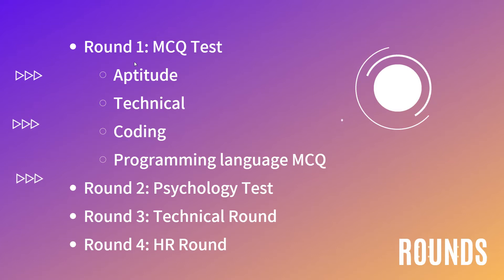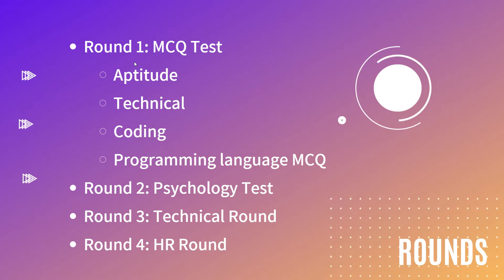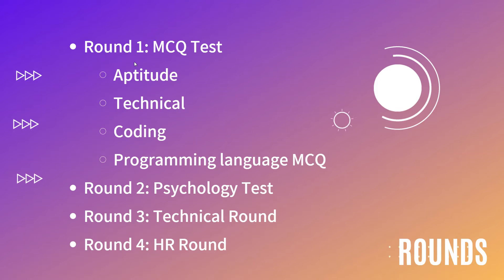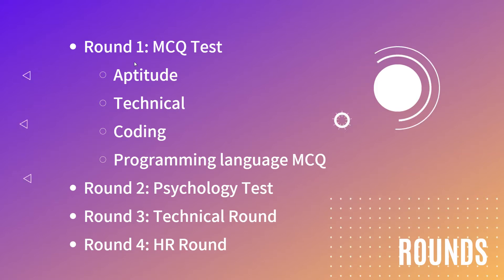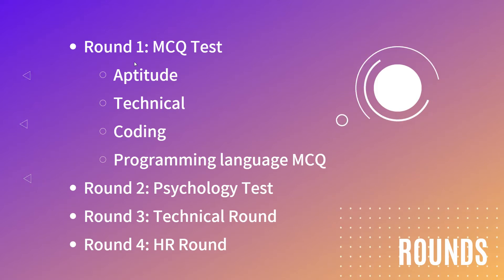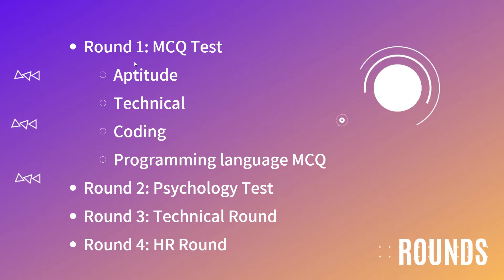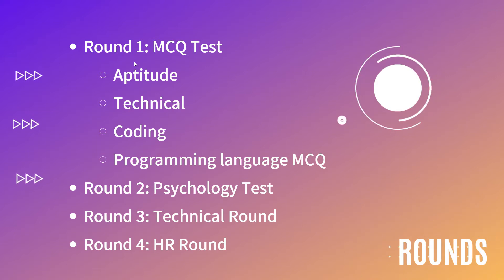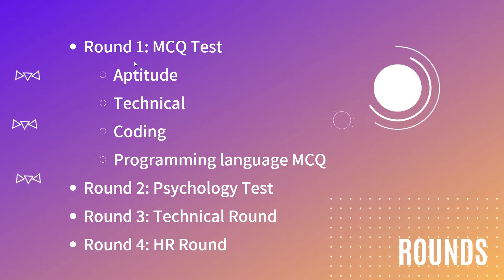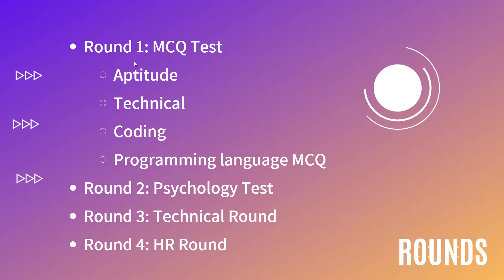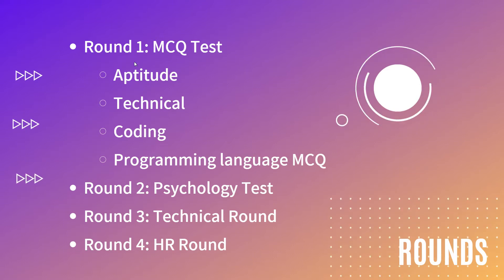Round one is an MCQ test and it is a knockout round — if you do not pass this, you do not move to the next rounds. Round one comprises aptitude, a technical section covering computer science knowledge including operating systems, DBMS, and computer networks, a coding round with questions in Java or C++, programming language MCQs, a psychology test, followed by a technical round and an HR round.